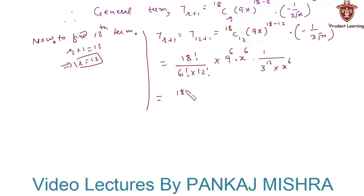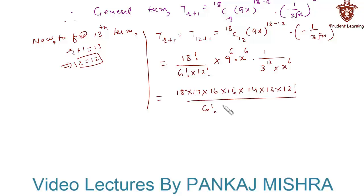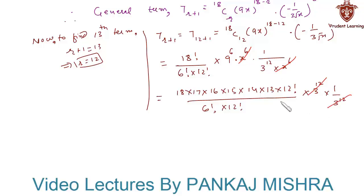18 factorial is nothing but 18 into 17 into 16 into 15 into 14 into 13 into 12 factorial, over 6 factorial into 12 factorial. And 9 raise to 6 can be written as 3 raise to 12, into 1 upon 3 raise to 12. Here we can cancel x raise to 6 from numerator and denominator, cancel 3 raise to 12, and cancel 12 factorial from numerator and denominator.